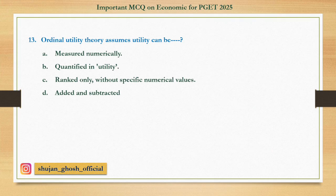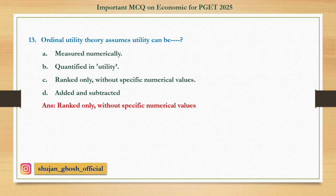Question number thirteen: Ordinal utility theory assumes utility can be — option A: measured numerically; B: quantified in utility; C: ranked only without specific numerical values; D: added and subtracted. Answer: ranked only without specific numerical values.